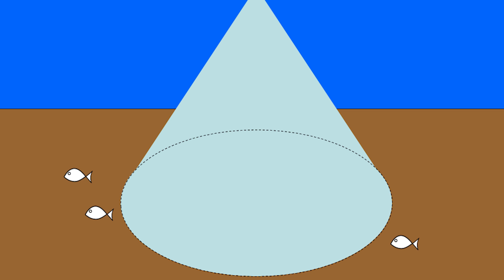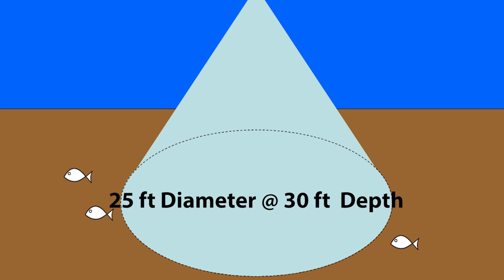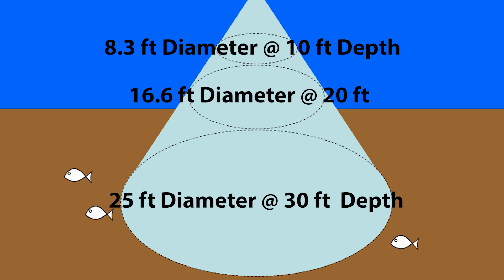The important thing to remember with this formula is that our sonar view from the transducer is actually a cone shape. That means that in 30 feet of water our transducer is looking at an area about 25 feet in diameter. However, when you break that down to 10 feet or 20 feet within that 30 foot water column, the total diameter is actually going to be less.